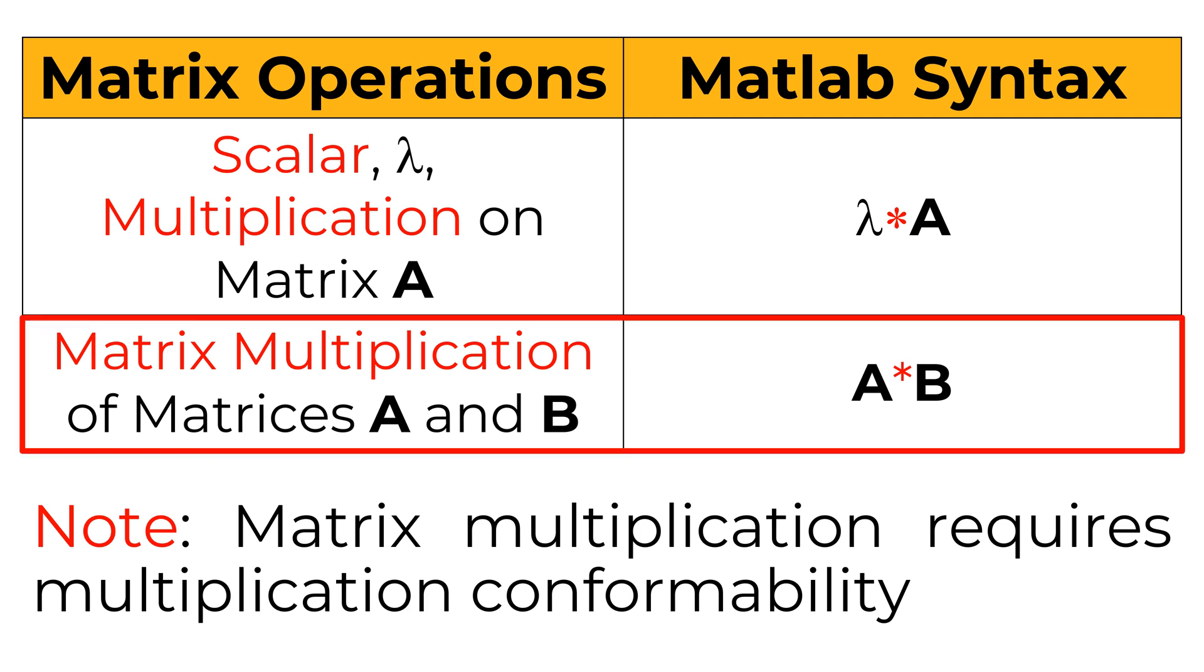For matrix multiplication, consider matrices A and B. Similarly, you can use star sign between two matrices. However, in order to multiply two matrices, the column size of matrix A must be the same as the row size of matrix B. Otherwise, it will give you an error message.